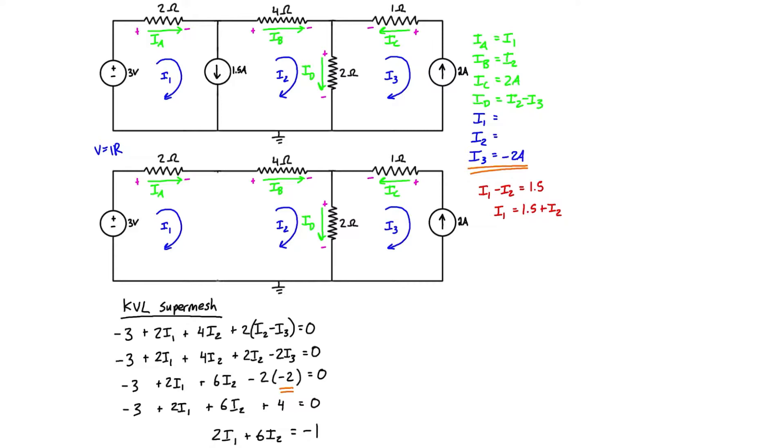We have 2i1 plus 6i2 is equal to negative 1. What we can do is we can substitute i1 here, so we have 2 times 1.5 plus i2 plus 6i2 is equal to negative 1. We can further simplify this just to see that i2 is equal to negative 0.5.